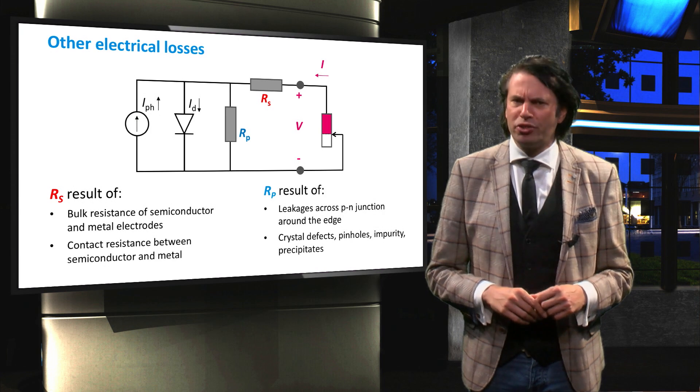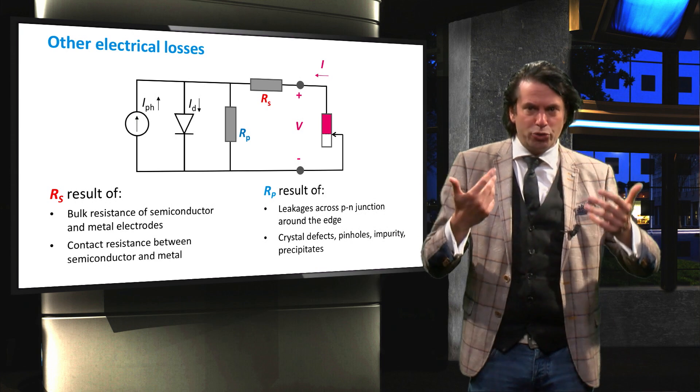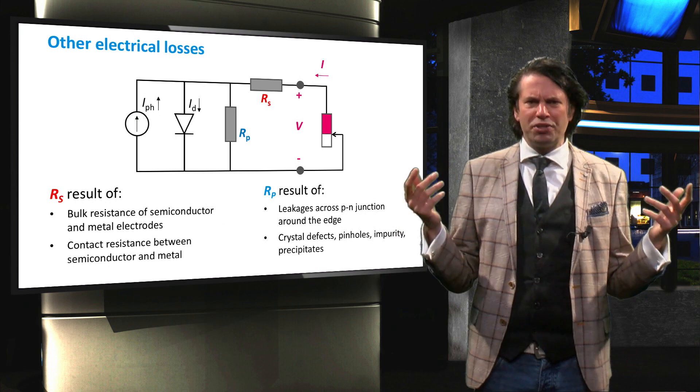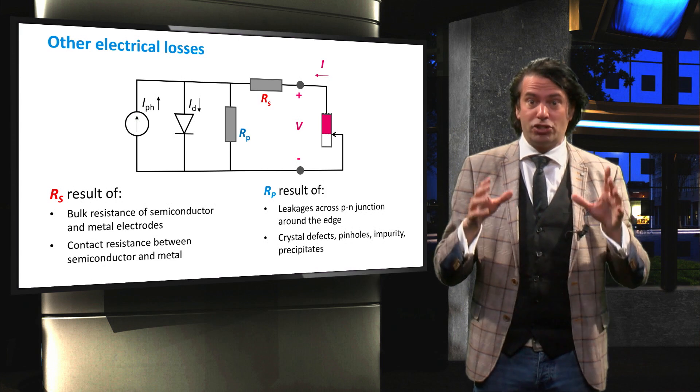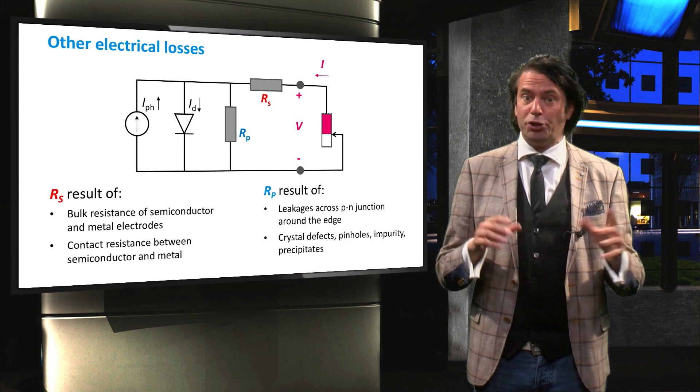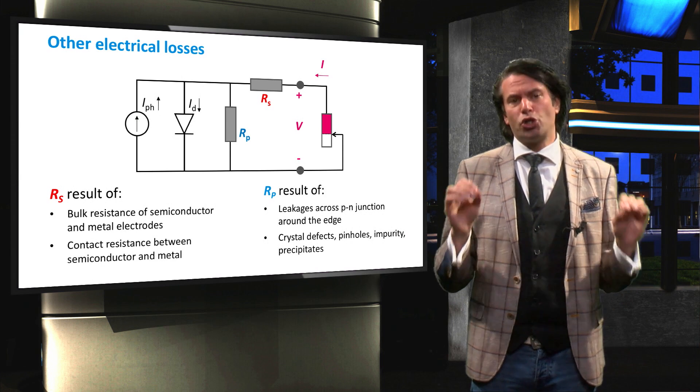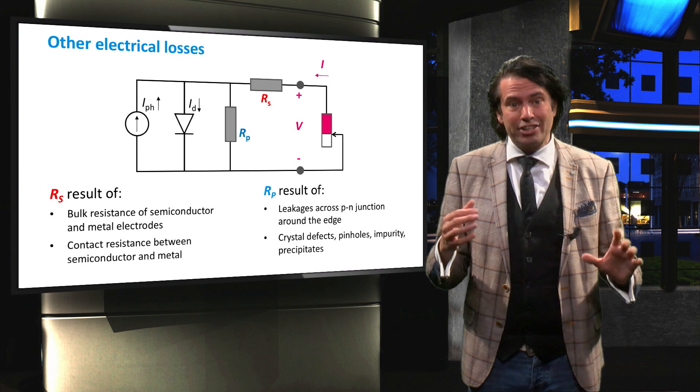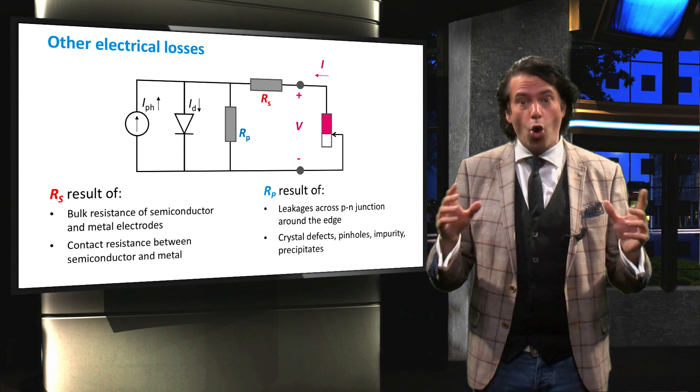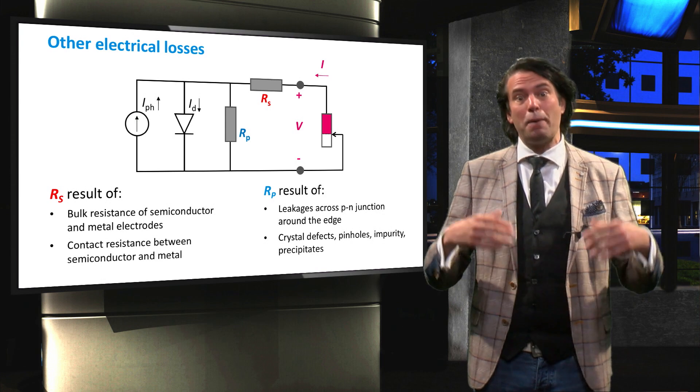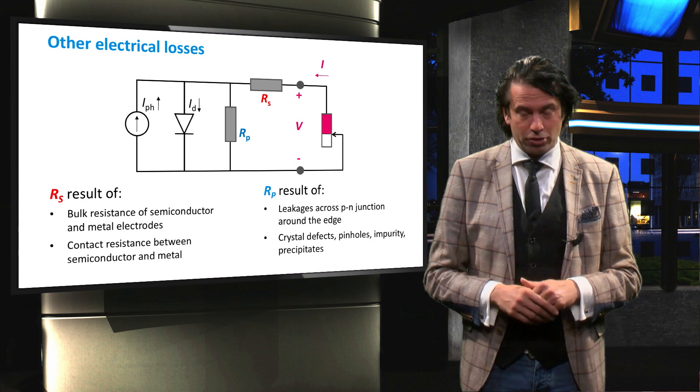Next we look at the shunt resistance. If you remember, this resistance is parallel to our load, so we actually want it to be as large as possible, otherwise it acts as a sink for the current that will reduce the power to the load. A reduced shunt resistance is caused by leakages across the PN junctions, around the edges of the solar cells, or defects, pinholes and impurities precipitates in the semiconductor material.